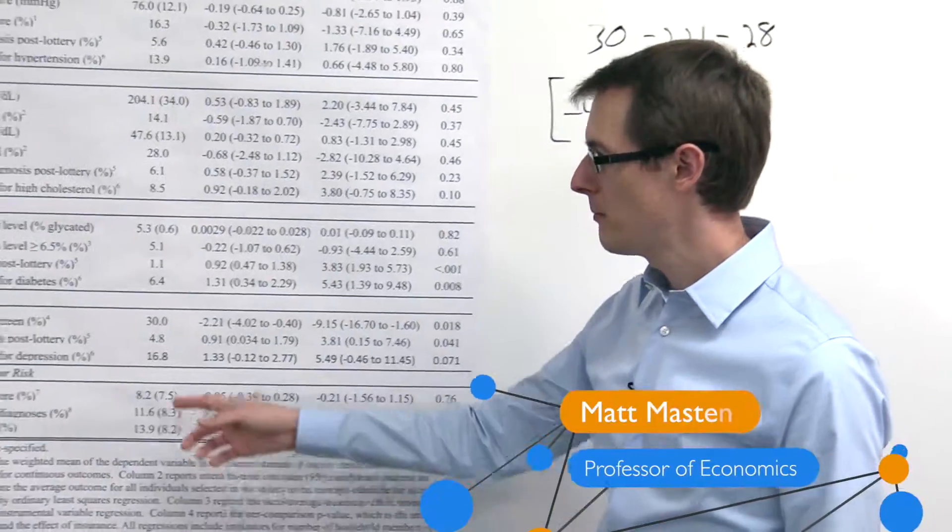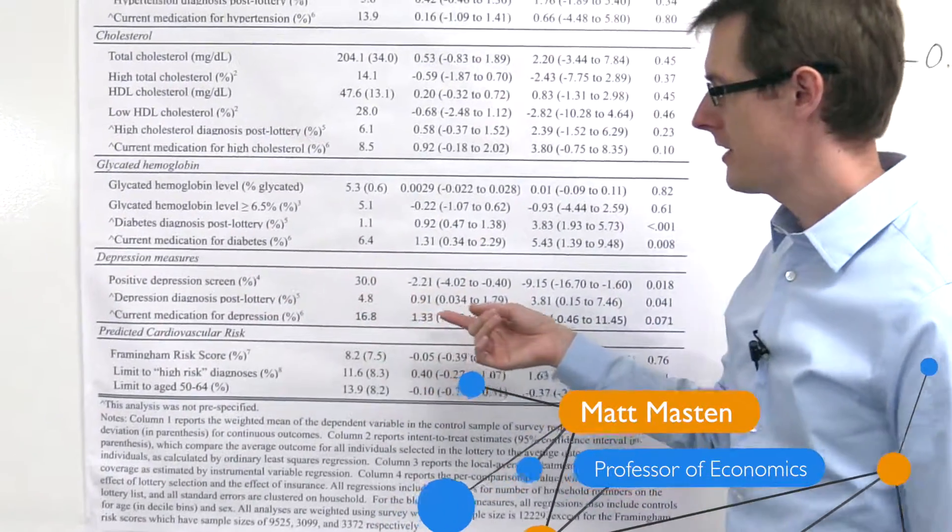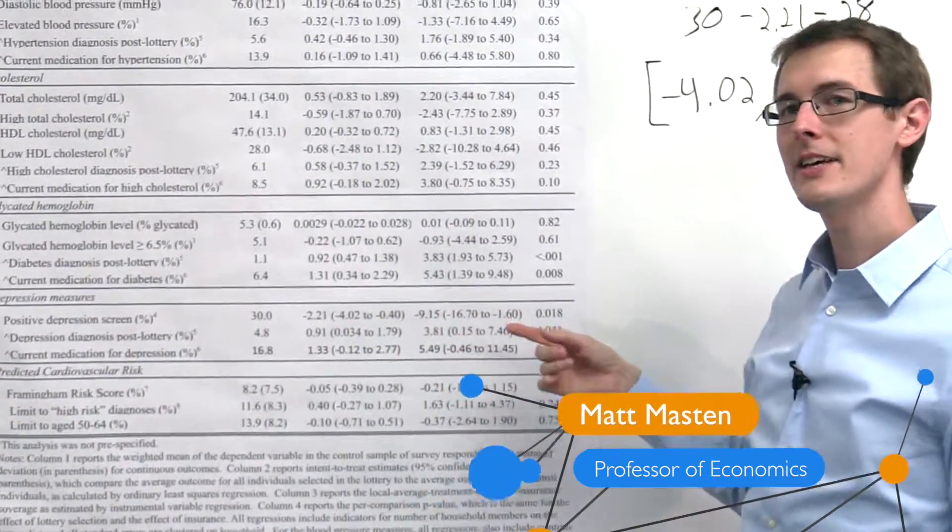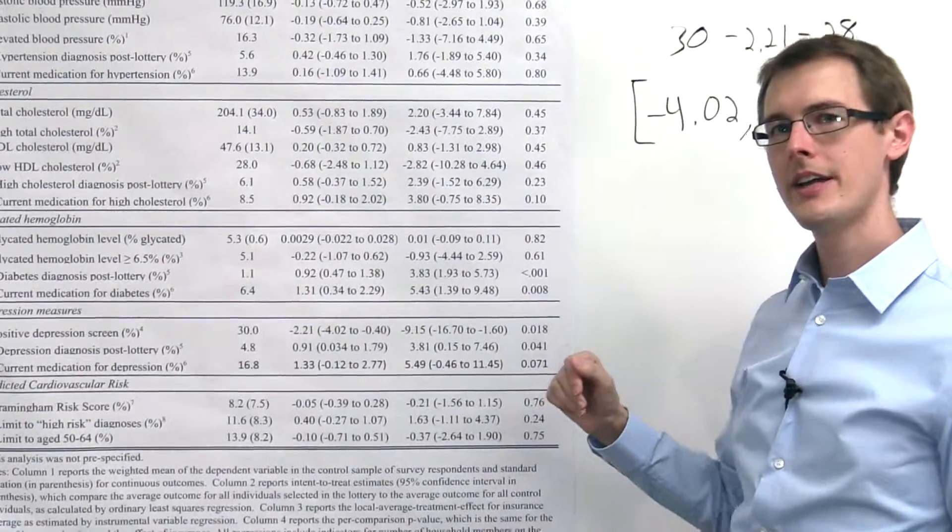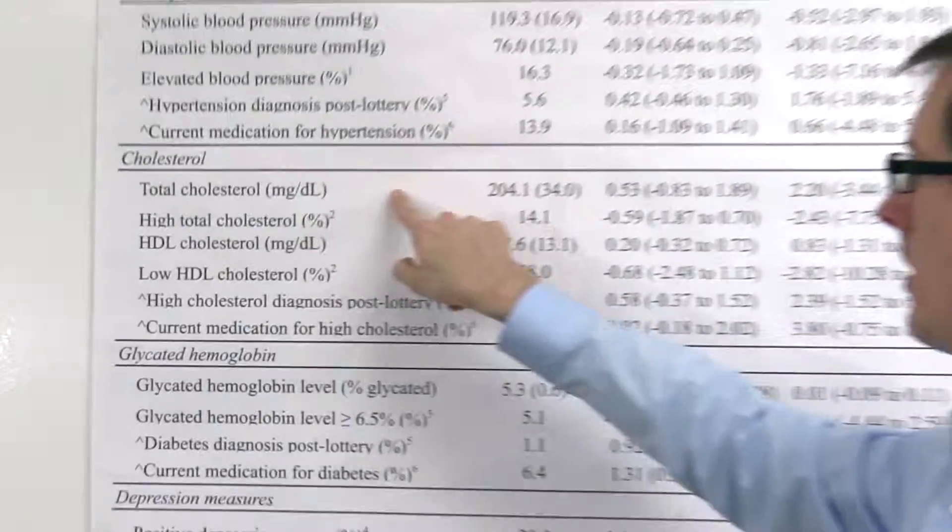So last time we looked at one outcome, positive depression screen, and found that there was a statistically significant effect of being in the treatment group on this outcome variable. Now let's look at a different one, total cholesterol.